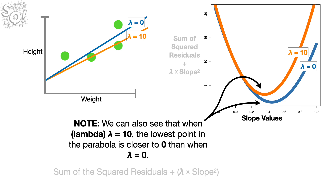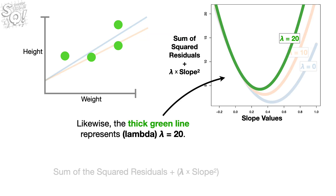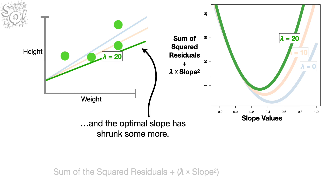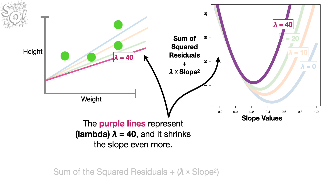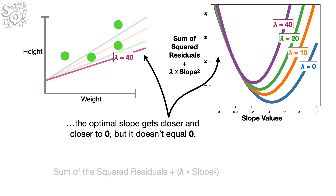We can also see that when lambda equals 10, the lowest point in the parabola is closer to 0 than when lambda equals 0. So either way we look at it, we see that the larger value for lambda shrunk the optimal value for the slope. Likewise, the thick green line represents lambda equals 20 — the minimum value is closer to 0 and the optimal slope has shrunk some more. The purple lines represent lambda equals 40, and it shrinks the slope even more. In other words, as we increase lambda for the ridge regression penalty — a.k.a. the L2 penalty, a.k.a. the squared penalty — the optimal slope gets closer and closer to 0, but it does not equal 0.